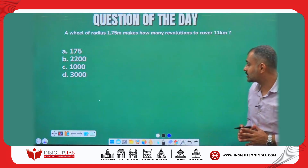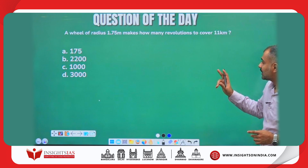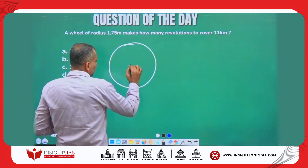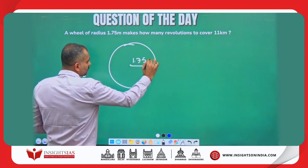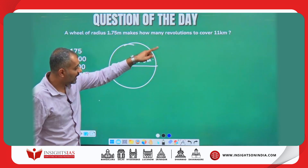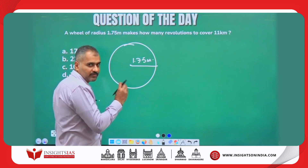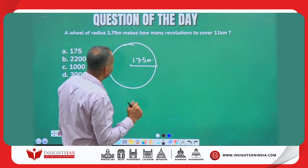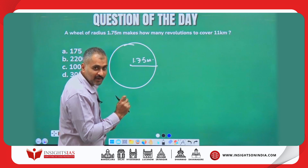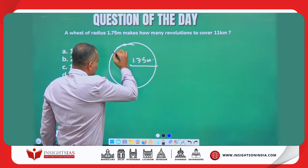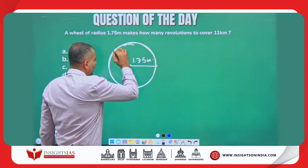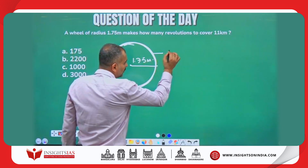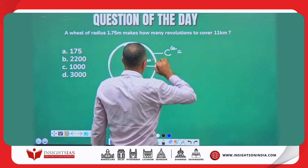This is today's question from mensuration: a wheel of radius 1.75 meters makes how many revolutions to cover 11 kilometers? Look here — this is a wheel of radius 1.75 meters. You may be familiar with RPM — revolutions per minute — on your bike. One revolution covers a distance equal to the circumference of the wheel.